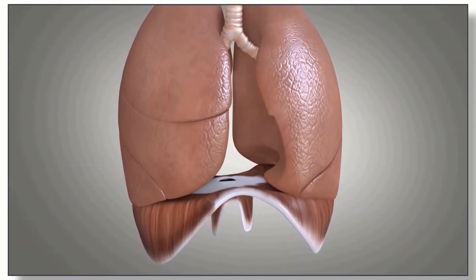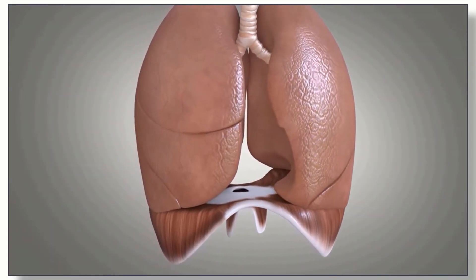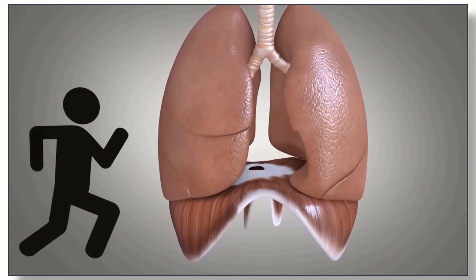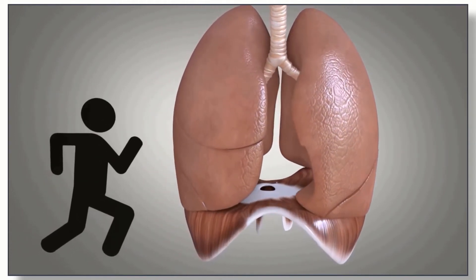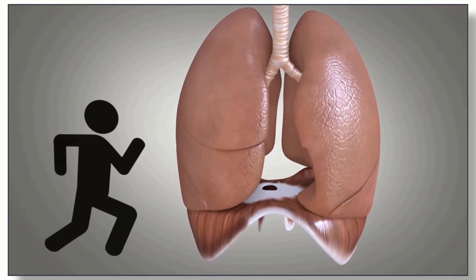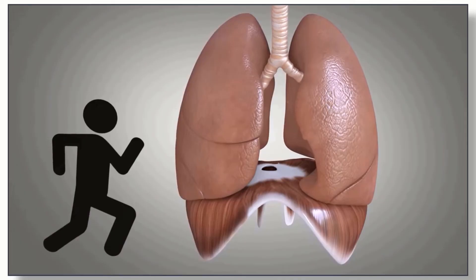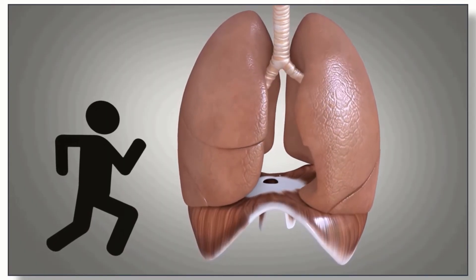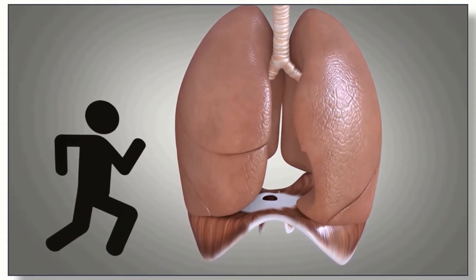During exercise, the demand for gas exchange increases. The contracting skeletal muscle consumes more oxygen and produces more carbon dioxide than at rest. To meet this demand, the number of active alveoli is increased. At the onset of exercise, there is an increase in both respiratory rate and heart rate, meaning both blood flow and air flow increase. Why is this important?